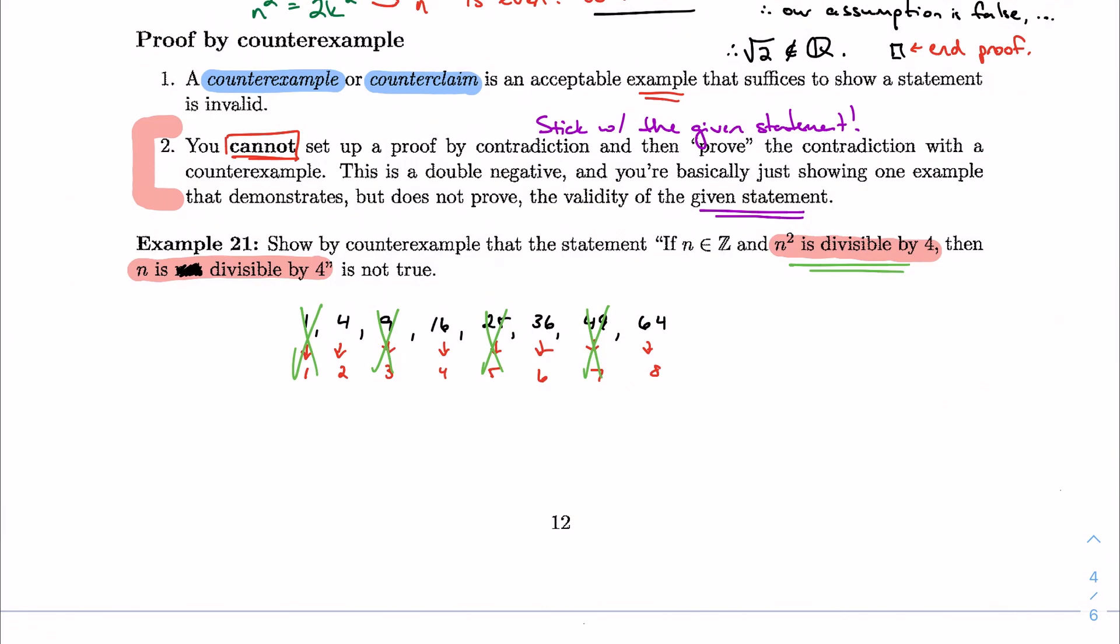Well, let's show an example now of an n squared that's divisible by 4, but whose n, whose original number, is not divisible by 4, because that would be my counterexample. My counterexample would be to show n not divisible by 4.